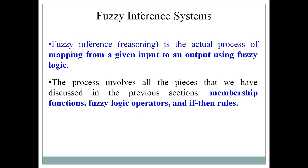Membership functions play a very important role while converting fuzzy values to crisp values and crisp values to fuzzy values. Fuzzy logic operators are also important because once we apply an operator, the state may change. And if-then rules are again important because everything works based on those rules.